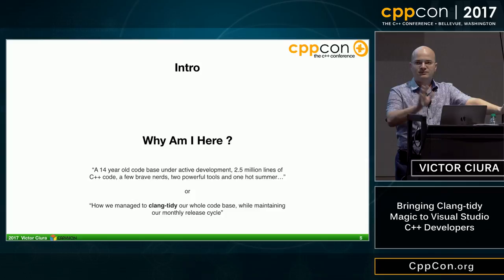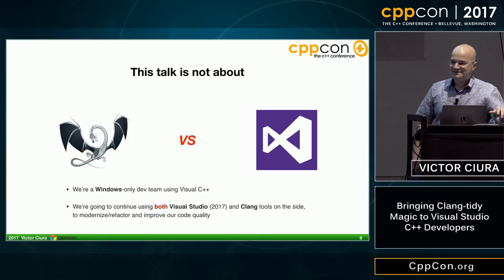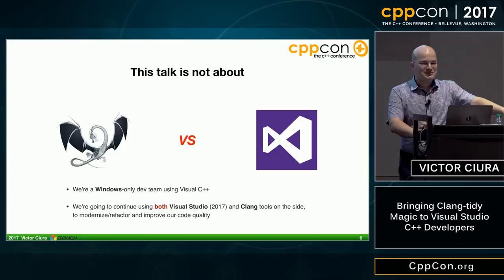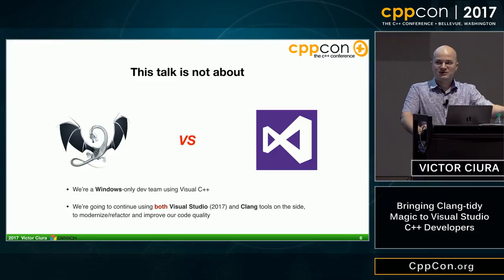Just a bit of a disclaimer: this talk is not about Clang versus Visual Studio — I see some Microsoft people in the room. We're a Windows-only development team and we're going to continue being this way, continuing to use both Visual Studio and Clang tools on the side to modernize, refactor, and overall improve our code quality.